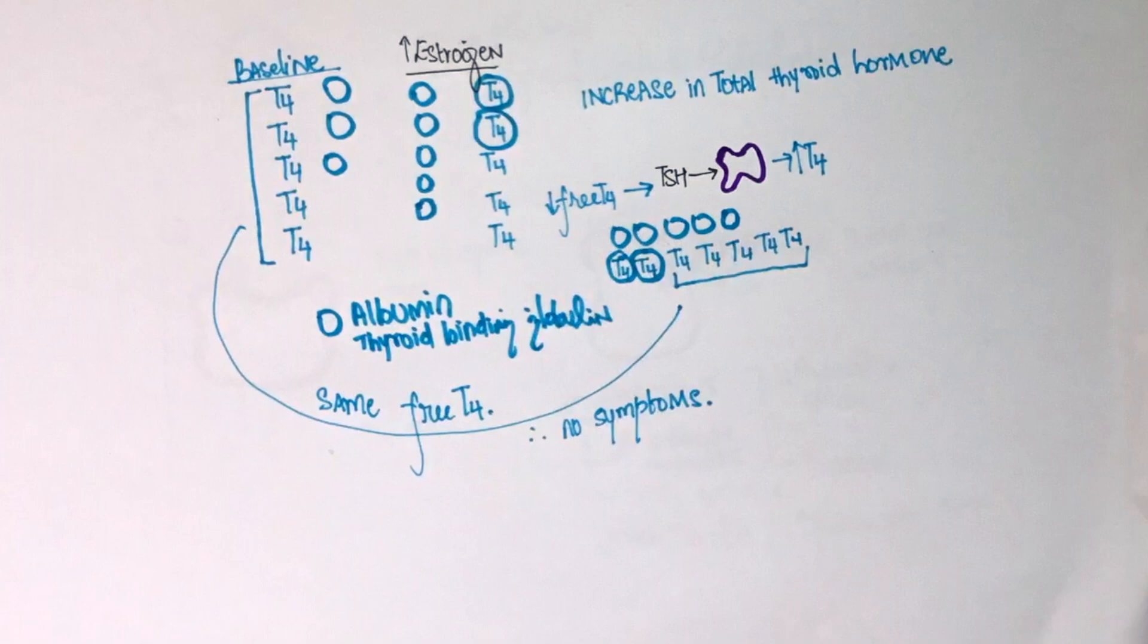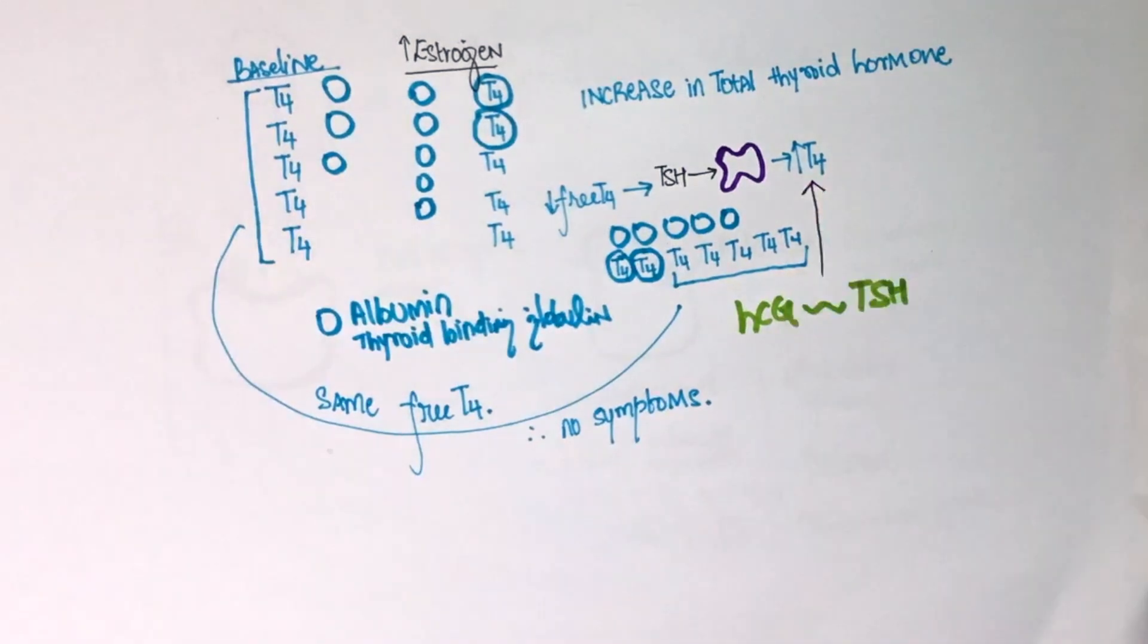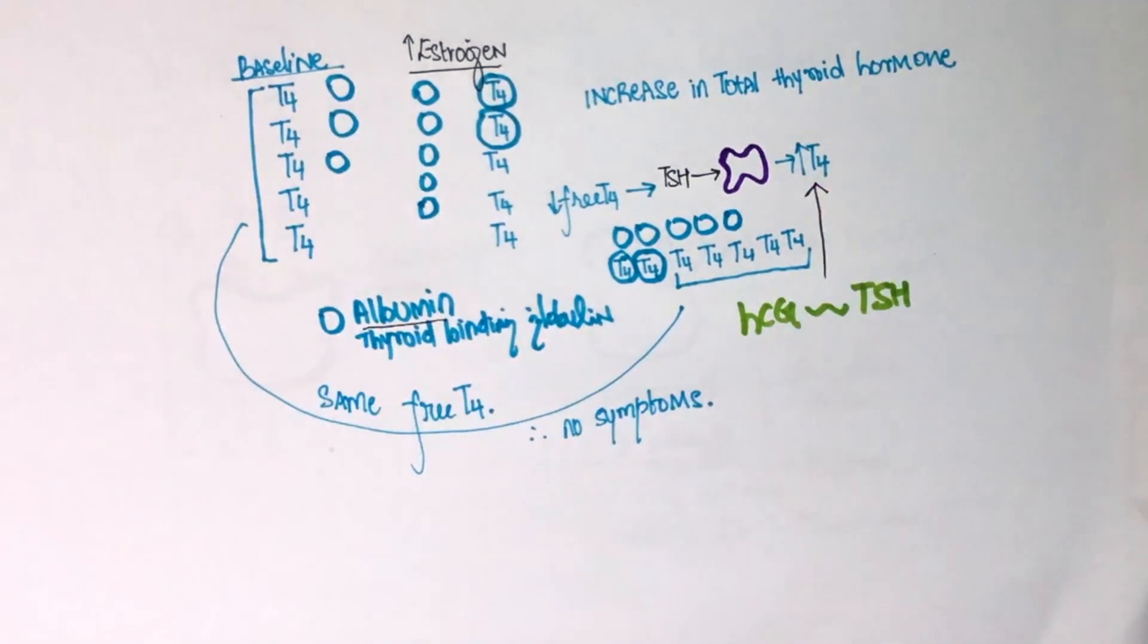The second mechanism is because of HCG. HCG and TSH have a common alpha subunit. Due to the structural similarity, HCG has the ability to stimulate the thyroid gland directly. This increases the amount of thyroid hormone.